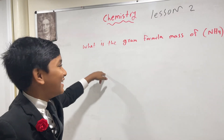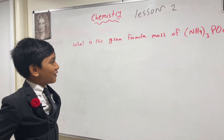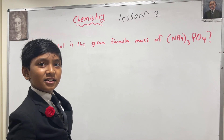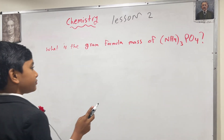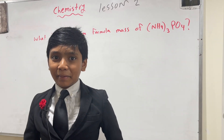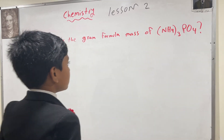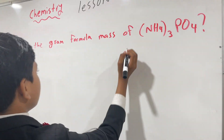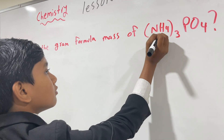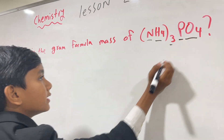Today we're going to be finding the Gram Formula Mass of ammonium phosphate. I have memorized Table E by heart. How do we do this? Well, we're just going to add up the molar masses of all of these.